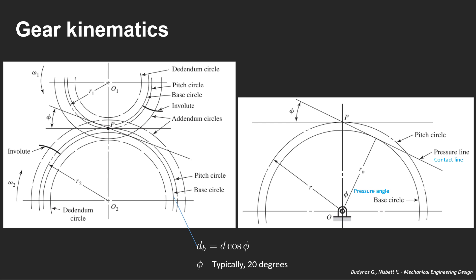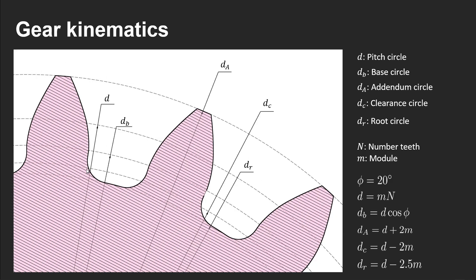First and foremost we need to familiarize ourselves with gear kinematics. We will use a pressure angle of typically 20 degrees, and we need to create circles or diameters in order to generate the involute. We also need to handle the root of the teeth. We will not be looking at offsetting the tooth profile to generate backlash, but we will take into consideration a clearance in order to be able to lubricate this adequately.